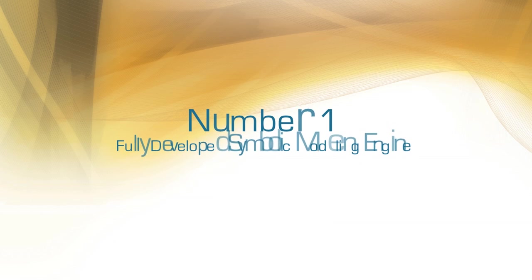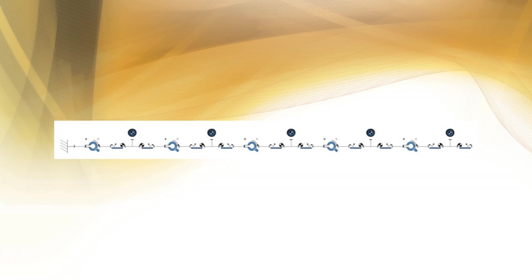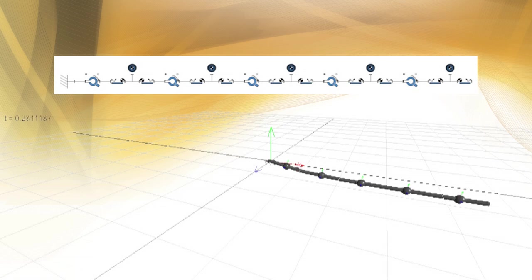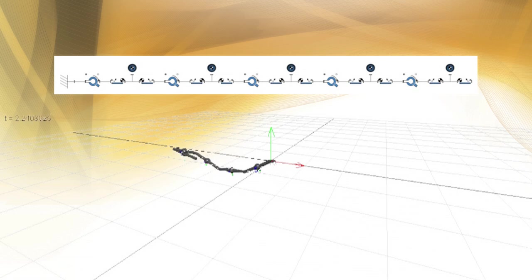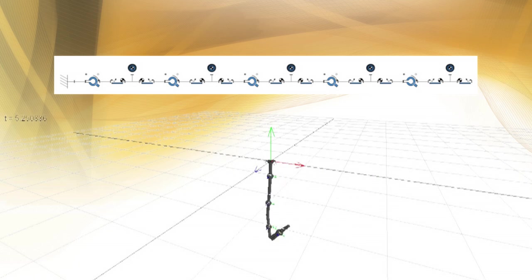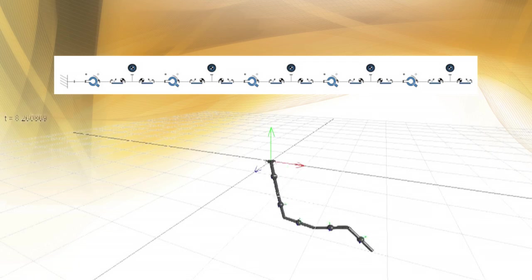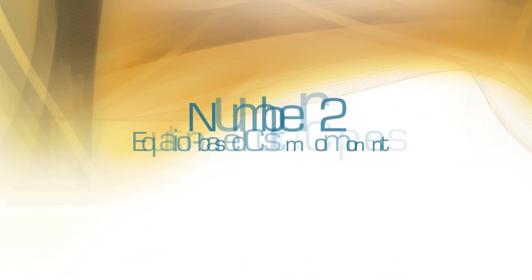Number one: a fully developed symbolic modeling engine. MapleSim is based on a fully developed symbolic modeling engine that's the result of over 30 years of research and development. This technology allows MapleSim to offer benefits other systems simply can't match, from automatically generated system equations to real-time code for complex systems.